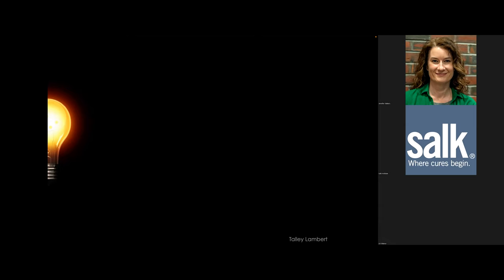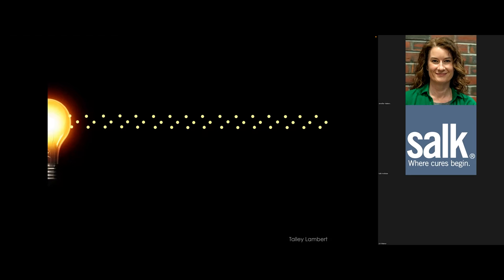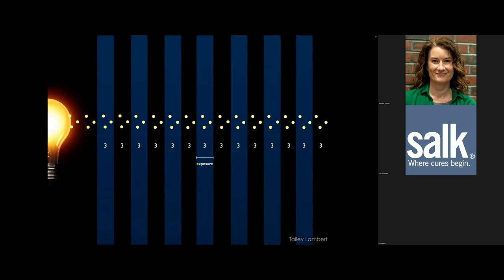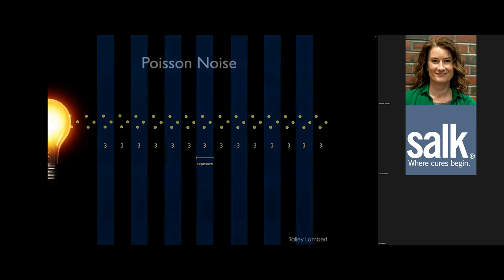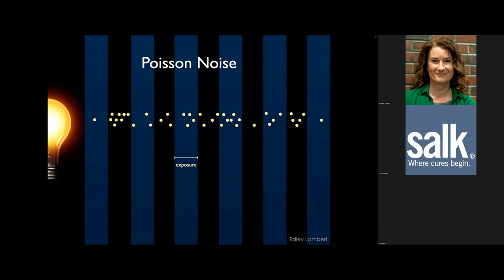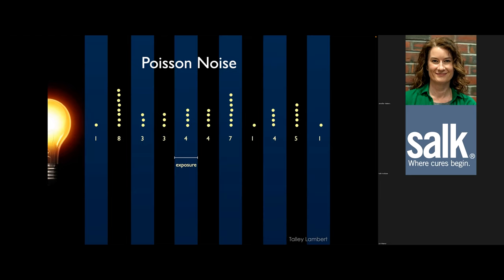Here's what Poisson noise means in practice: if a light source emits photons stochastically — like cars passing on a highway — counting photons for any given time frame gives a different number each time. You can think of the exposure time on a camera as your counting window. The variance observed equals the square root of the photons counted. This is a fundamental limitation you cannot make go away.